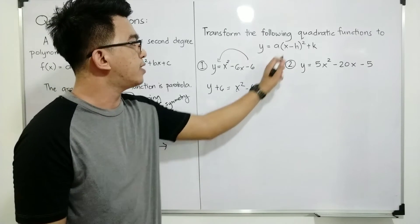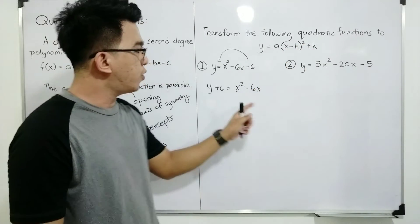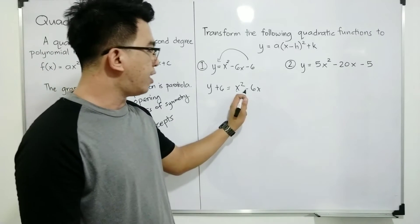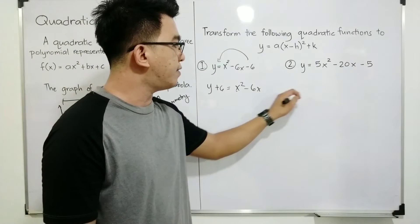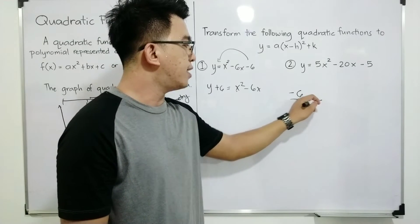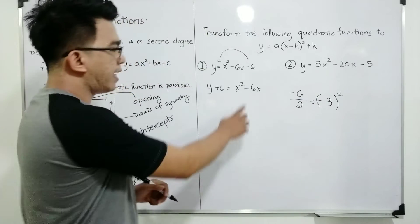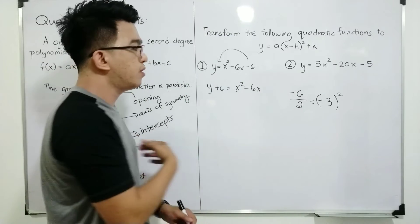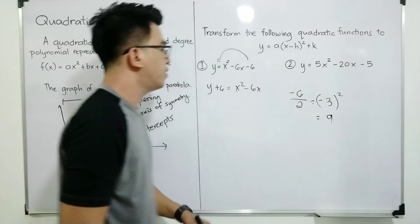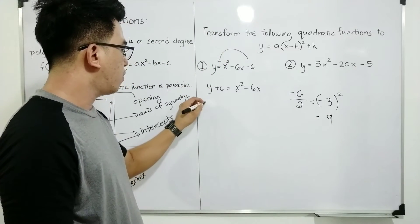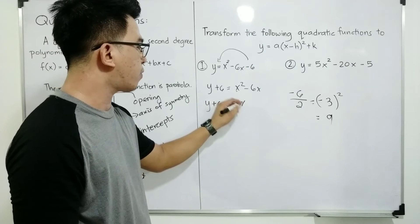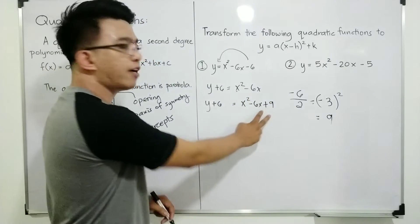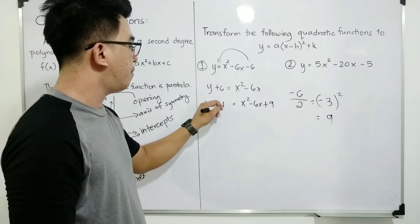What will happen next is that we have x minus h squared, so we will create a perfect square trinomial here coming from x squared minus 6x. The step is: get the coefficient of your linear term, which is 6x — that is negative 6 — divided by 2, and that is negative 3. Then square your answer. Get the coefficient, which is negative 6, divided by 2, and then square the quotient. This will give you negative 3 squared, which is equal to 9. So it will become y plus 6 is equal to x squared minus 6x plus 9. Since we added 9 on the right side, we need to also add it on the left side, so this will become plus 9.